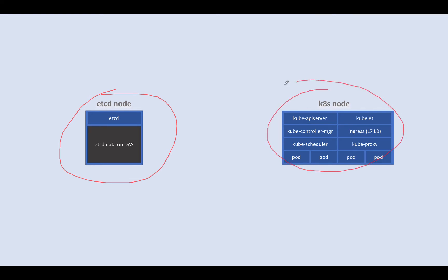The other thing we have here is a Kubernetes node. It has all of the master components: Kube API server, Kube controller manager, and Kube scheduler. It also has what I would normally call the worker components — others would just call them node components. And of course, you have your pods down below. So this is a single machine — again, it could be a virtual machine or a physical machine — and a Kubernetes node contains all of these things.